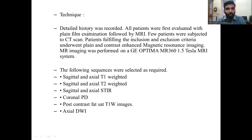Technique: detailed history was recorded. All patients were first evaluated with plain film examination followed by MRI. A few patients were subjected to CT scan. Patients fulfilling the inclusion and exclusion criteria underwent plain and contrast-enhanced MRI. MR imaging was performed on a GE Optima MR360 1.5 Tesla MRI system. Sequences included sagittal and axial T1-weighted, sagittal and axial T2-weighted, coronal proton density, post-contrast fat-sat T1-weighted, and axial diffusion-weighted images.